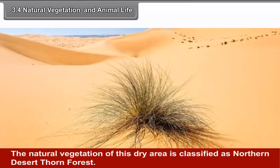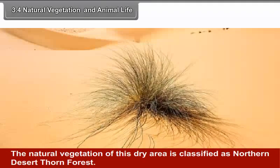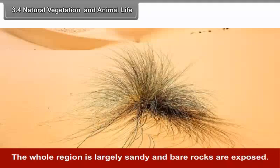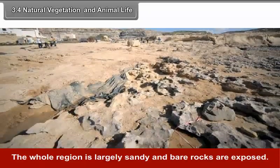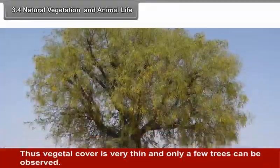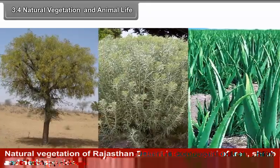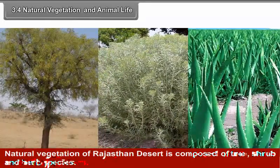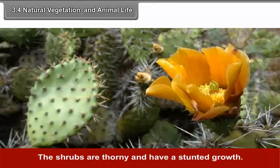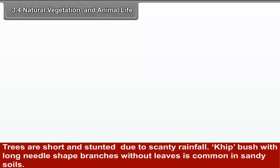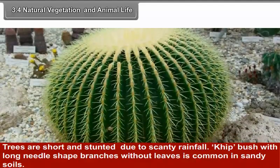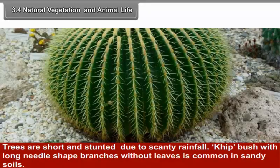3.4 Natural Vegetation and Animal Life. The natural vegetation of this dry area is classified as northern desert thorn forest. The whole region is largely sandy and bare rocks are exposed, so vegetable cover is very thin. Only a few trees can be observed. Density and size of vegetable patches increases from west to east following the increase in rainfall. Natural vegetation is composed of tree, shrub and herb species. The shrubs are thorny and have a stunted growth. Trees are short and stunted due to scanty rainfall. Kip bush with long needle-shaped branches without leaves is common in sandy soils.